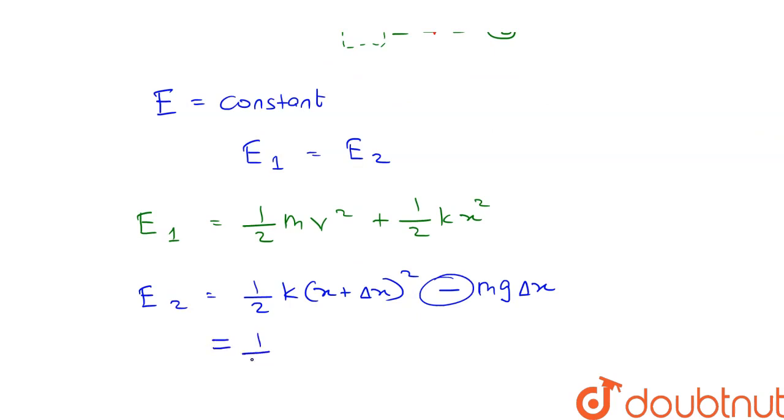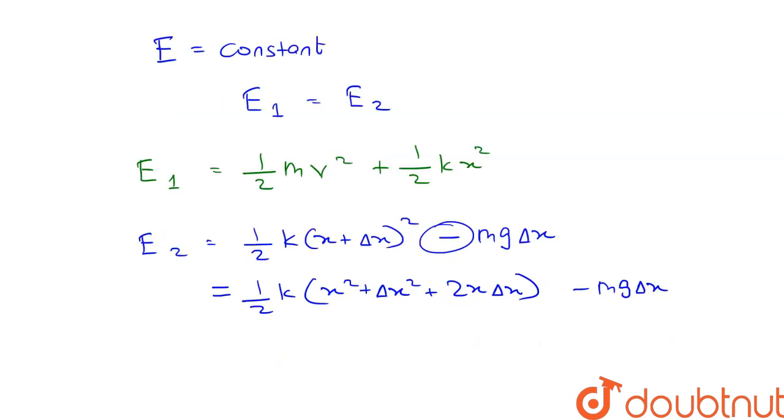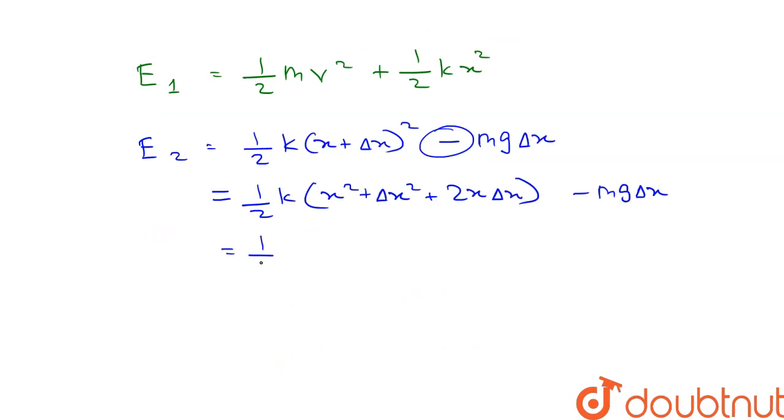Simplifying E2, we get half k times x squared plus delta x squared plus 2x delta x minus mg delta x. This implies half k x squared plus k x delta x minus mg delta x.